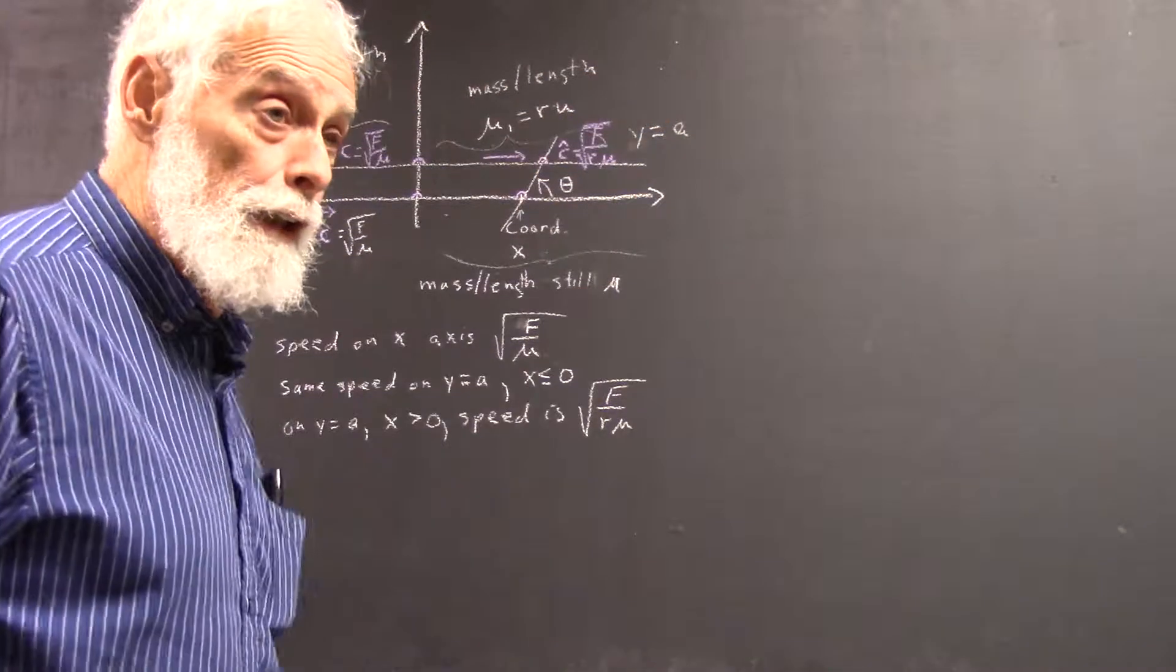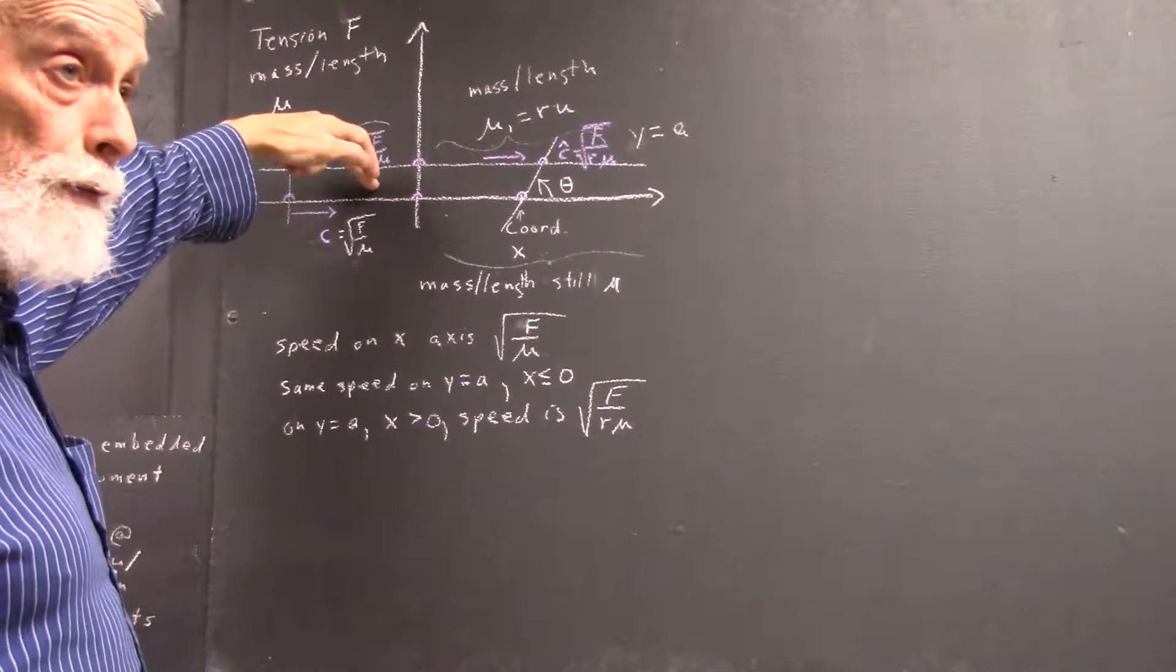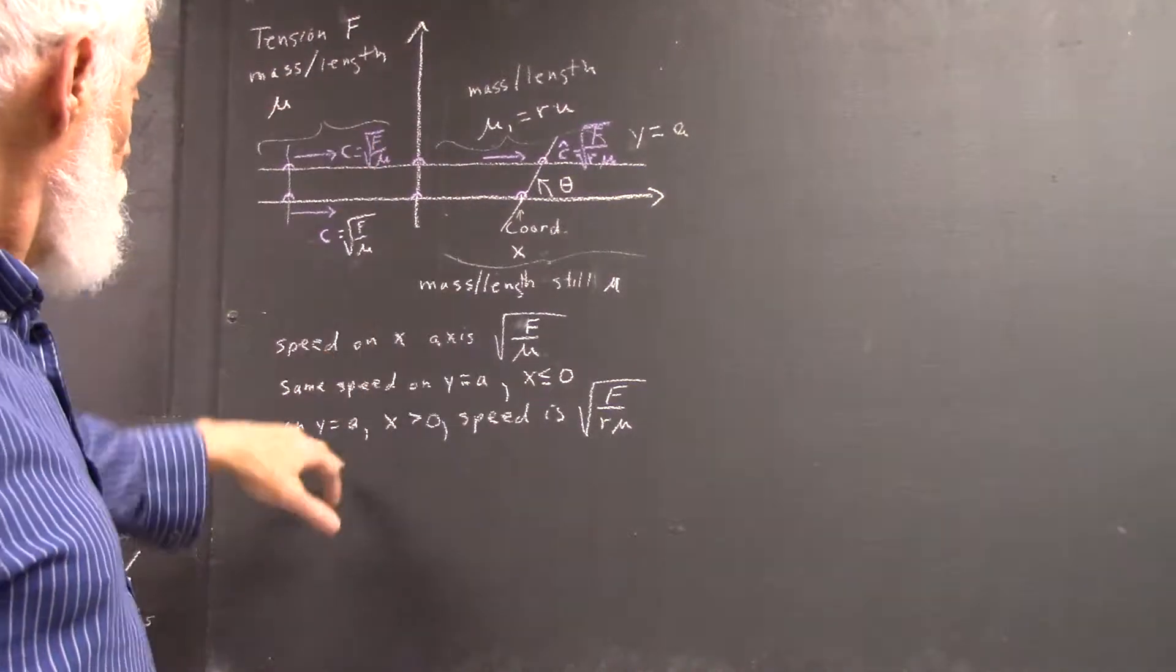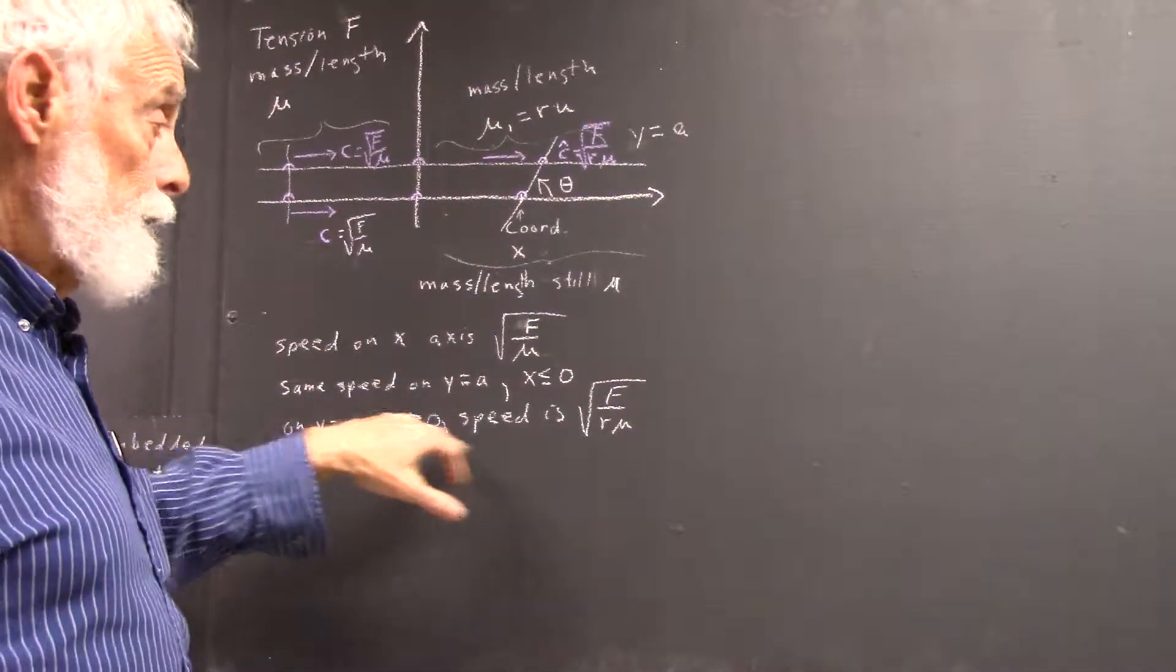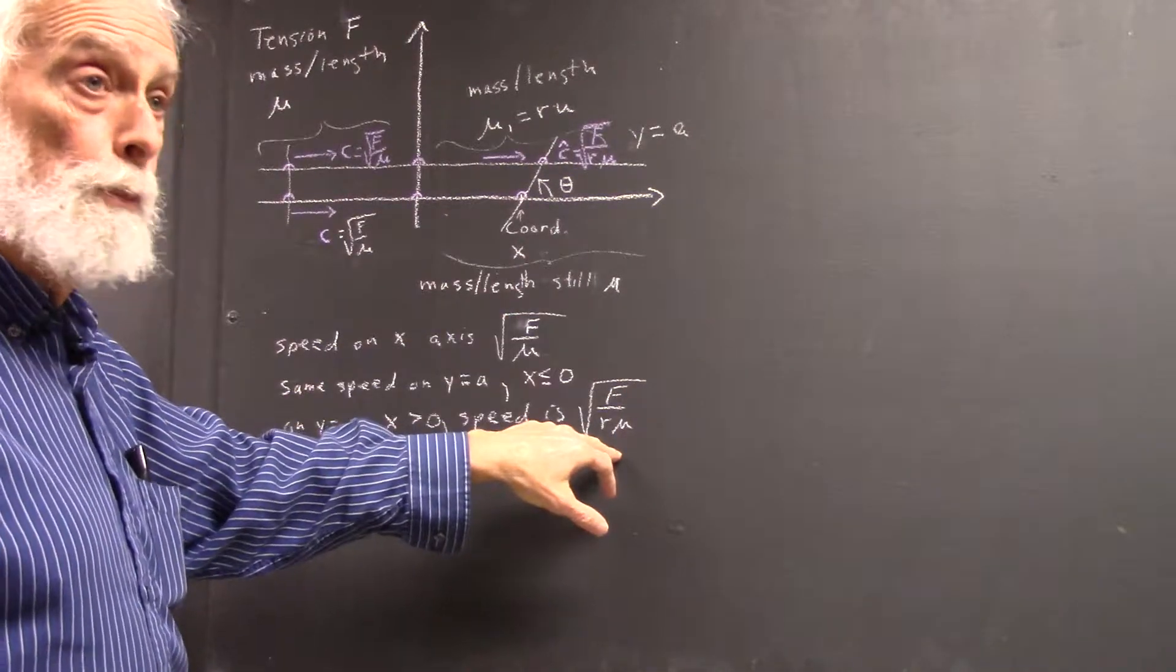On the y equals a line, the speed up to this point is the same, square root of f over mu. But when x is greater than 0, since the mass density changes, the speed becomes square root of f over r mu.